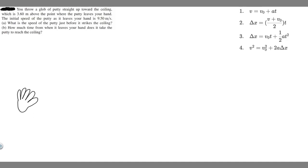In this problem, we're told you throw a glob of putty straight up toward the ceiling, which is 3.6 meters above the point where the putty leaves your hand. The initial speed of the putty as it leaves your hand is 9.5 meters per second. Part A: What is the speed of the putty just before it strikes the ceiling? Part B: How much time from when it leaves your hand does it take the putty to reach the ceiling?